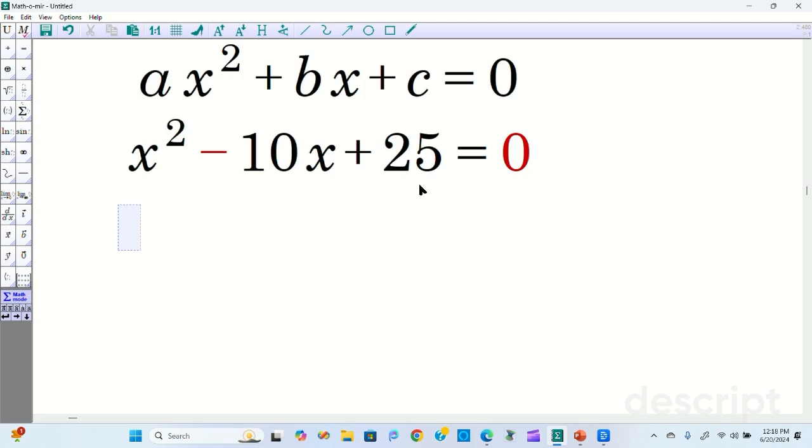So now you factor two numbers that multiply to 25 and add to negative 10. So it's going to be x minus 5 and x minus 5. Check. Negative 5 times negative 5, 25. Negative 5 plus negative 5, negative 10. And this is equal to 0.